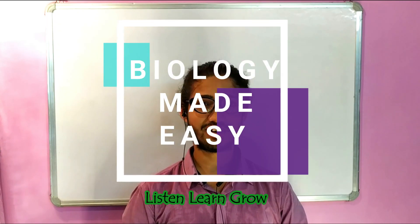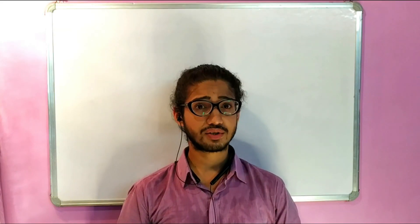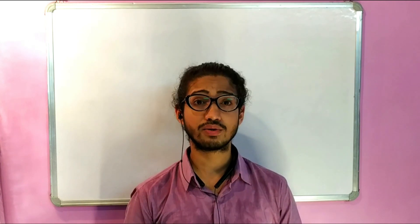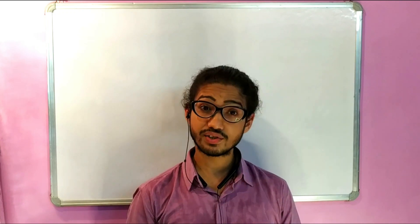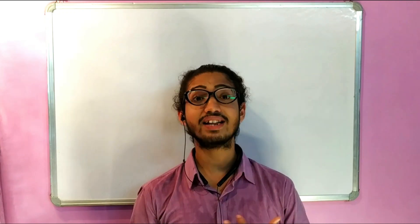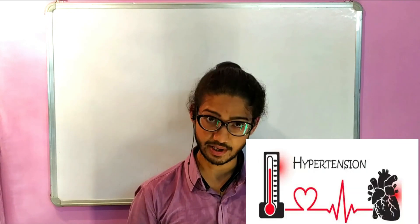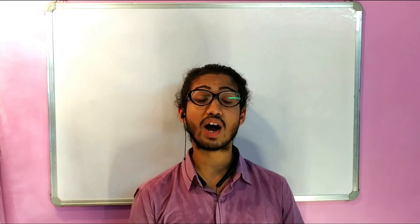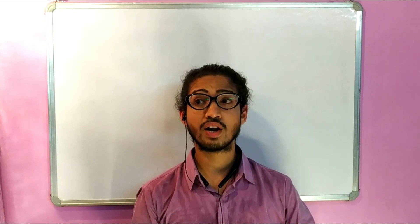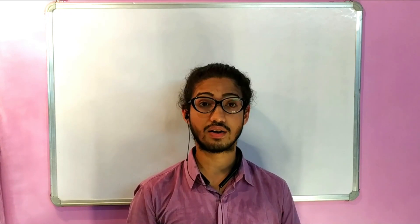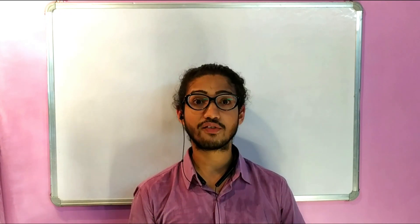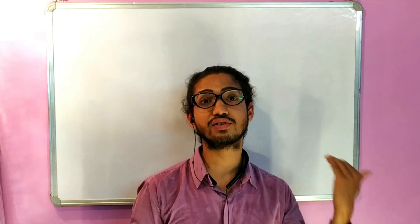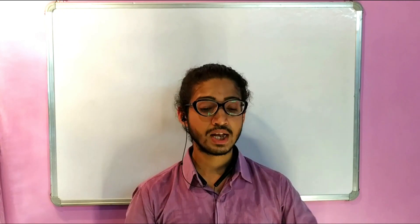Hello friends, welcome to my YouTube channel Biology Made Easy. In the previous lecture we understood what exactly blood pressure means. Today we're going to learn about the different types of conditions found due to imbalance in blood pressure — high blood pressure, also called hypertension, and low blood pressure, also called hypotension. We'll also look into how cholesterol impacts high blood pressure and how it puts our heart at risk, and the connections between cholesterol, hypertension, and heart blockage.